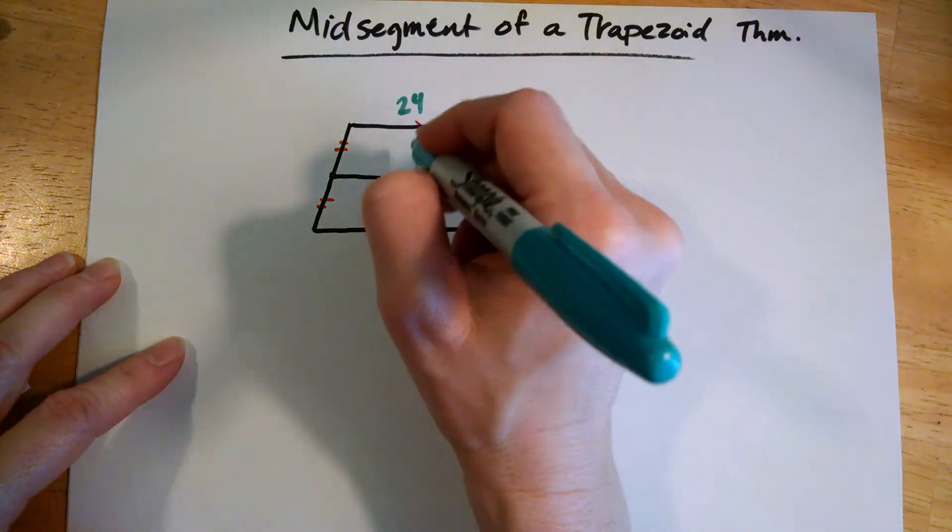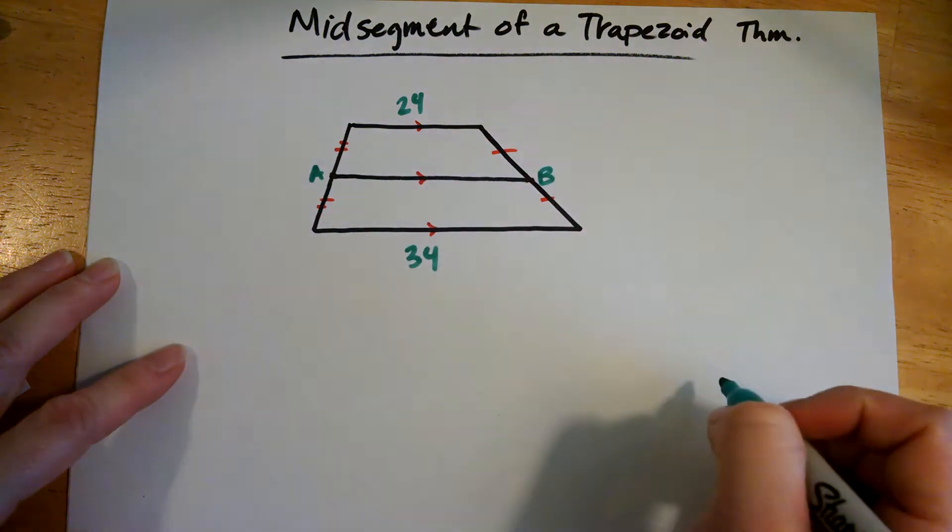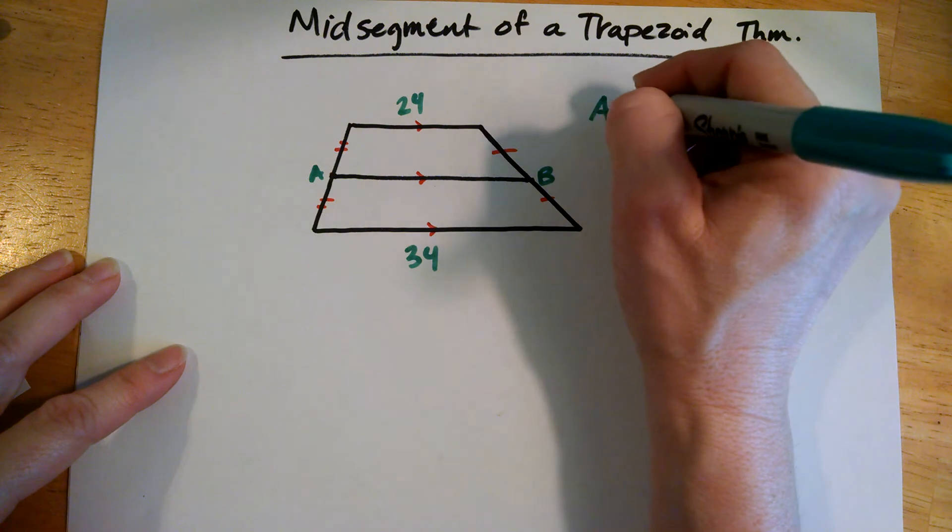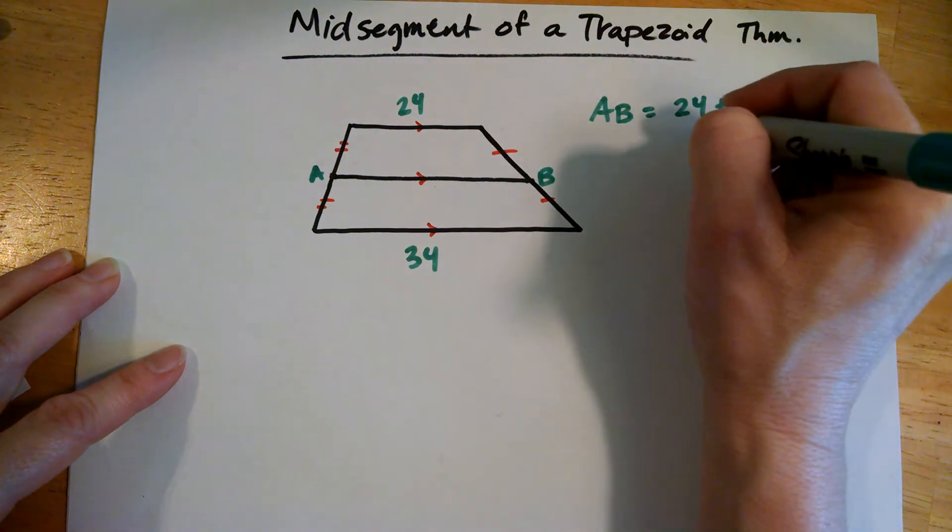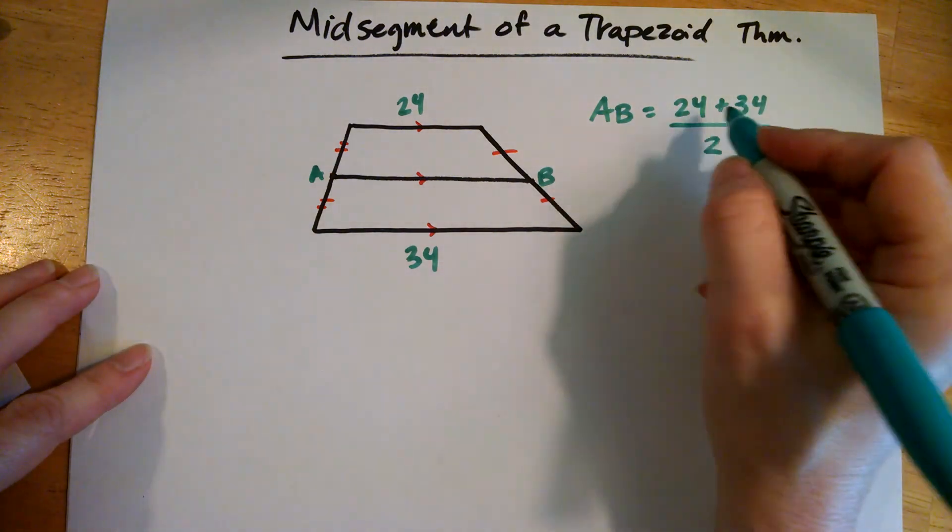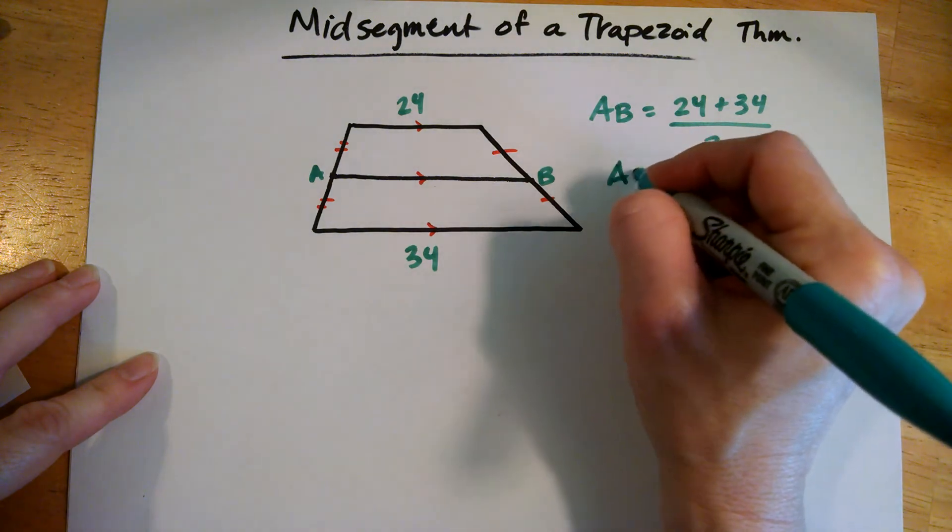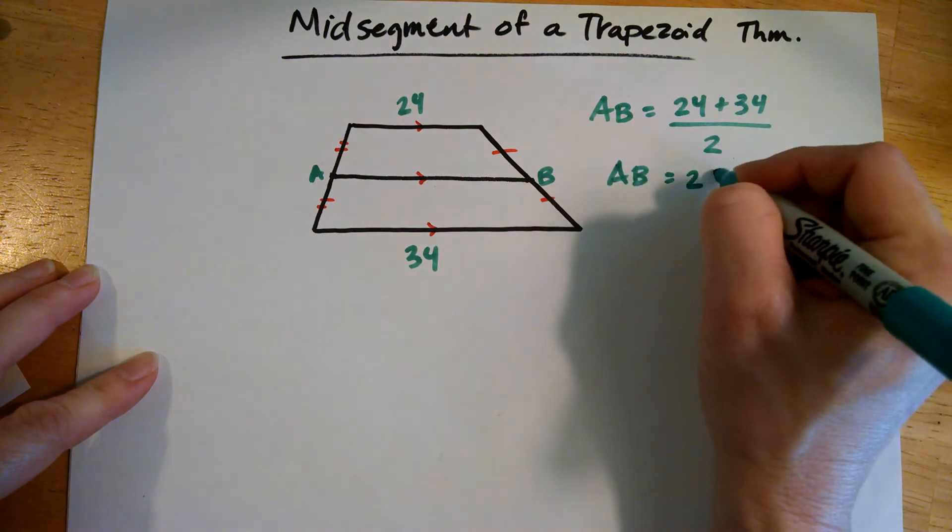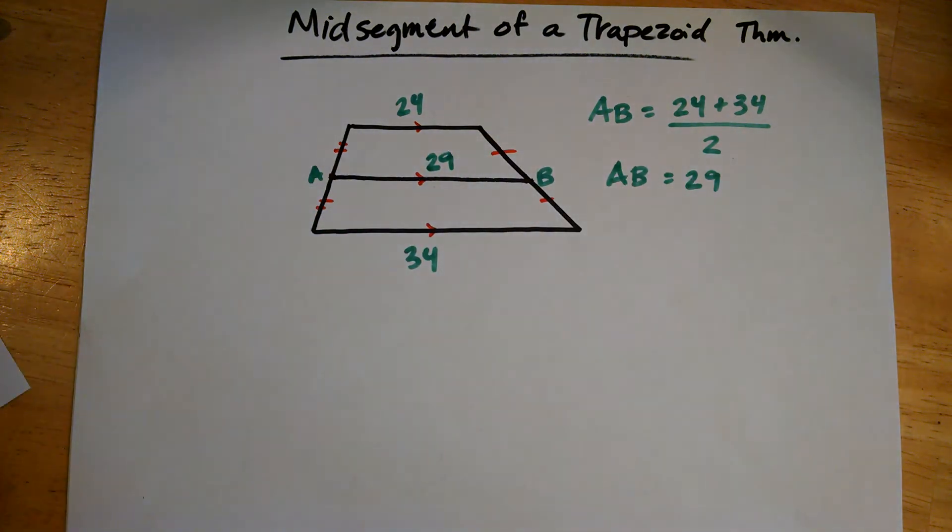So the mid-segment we'll call this AB. AB equals 24 plus 34, divide by 2. So we have 58 divided by 2, that's 29. So AB equals 29. So 29 units is the length of the mid-segment of this trapezoid.